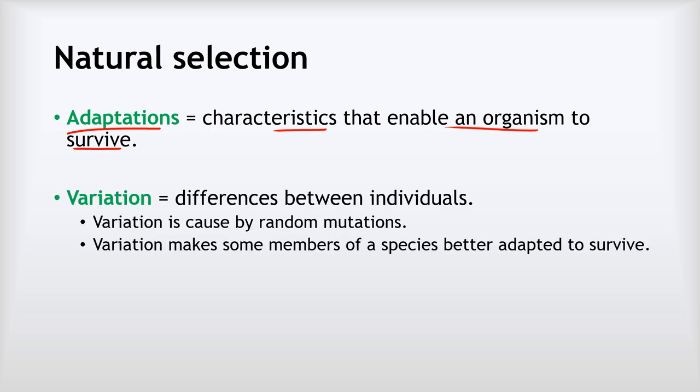There's also variation. Variation is about the differences between individuals, largely caused by random mutations to DNA that happen during reproduction. Variation makes some members of a species better adapted to survive. It means some individuals are going to be stronger, faster, more intelligent, better able to store fat for winter, better able to resist UV light, or better able to resist certain diseases. This variation means some individuals are better adapted to survive than others.